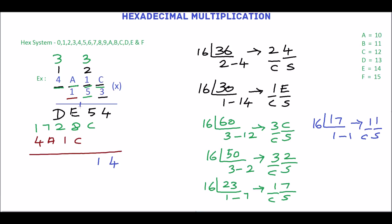Next add 1 plus E, which is 14 (with carry 1). Then 1 plus 14 is 15. 15 plus 8 is 23. 23 plus 12 is 35. We will convert 35 — the quotient is 2 and the remainder is 3. The equivalent hex number is 23. In this, 3 is the sum and 2 is the carry. Write 3 and carry 2 over the next digit.